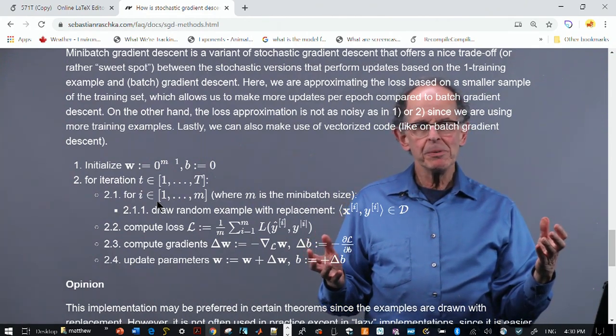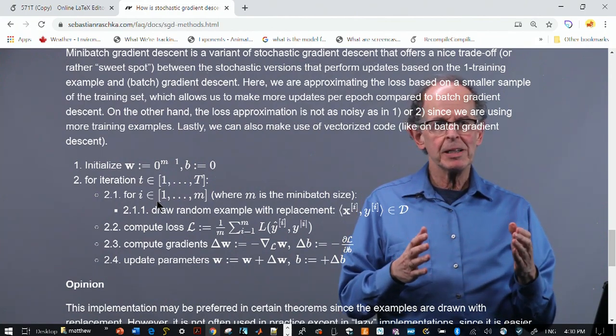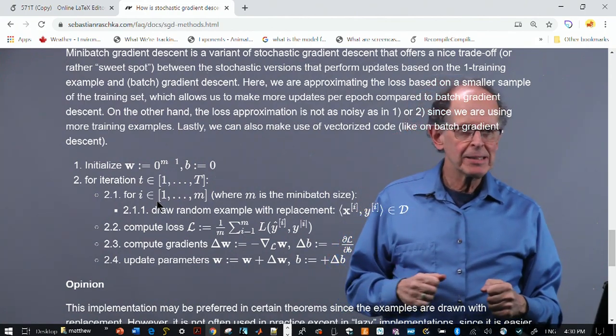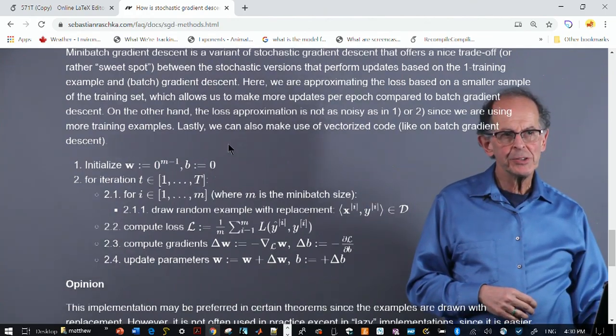So, for example, if the number of data is 2,000 and your batch size is 500, then you'll do four batches. Here's a variation on that.